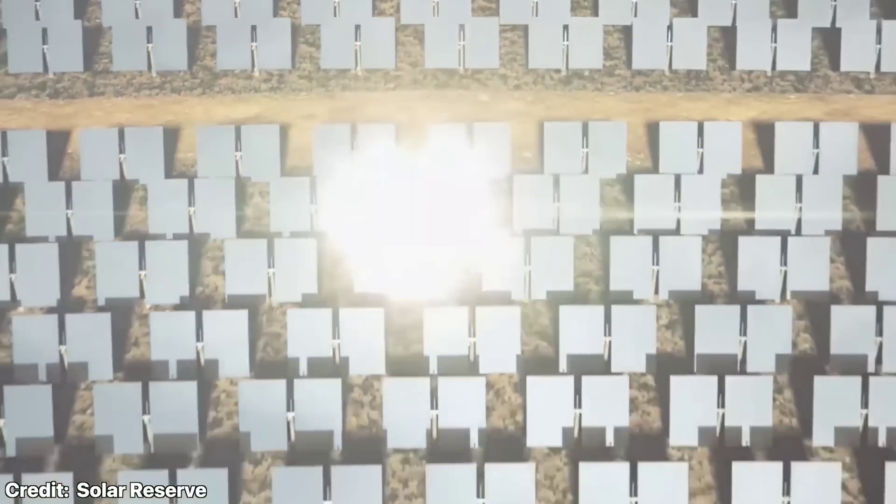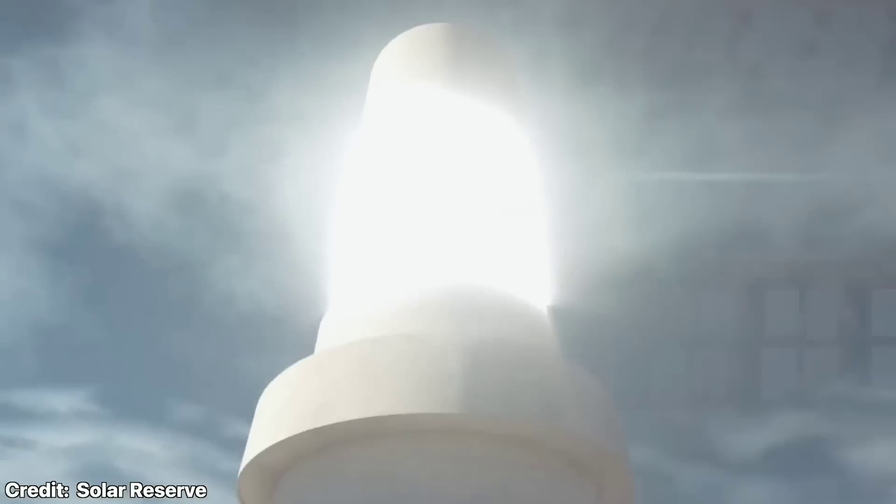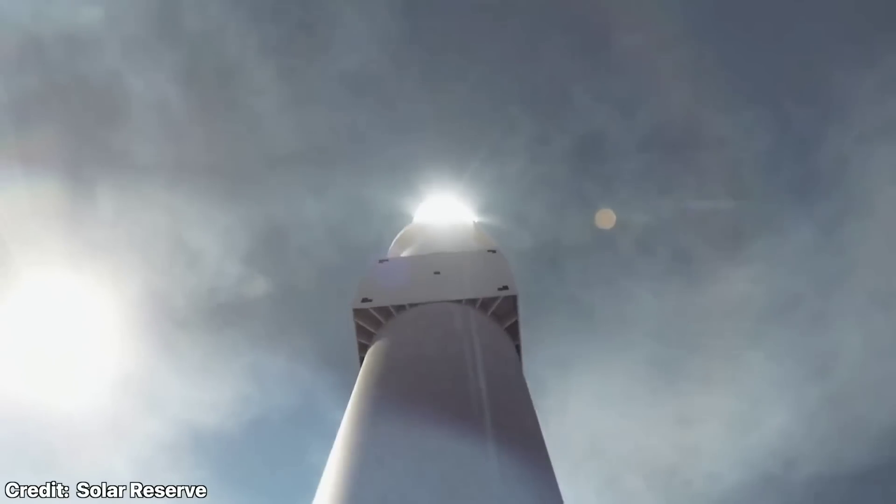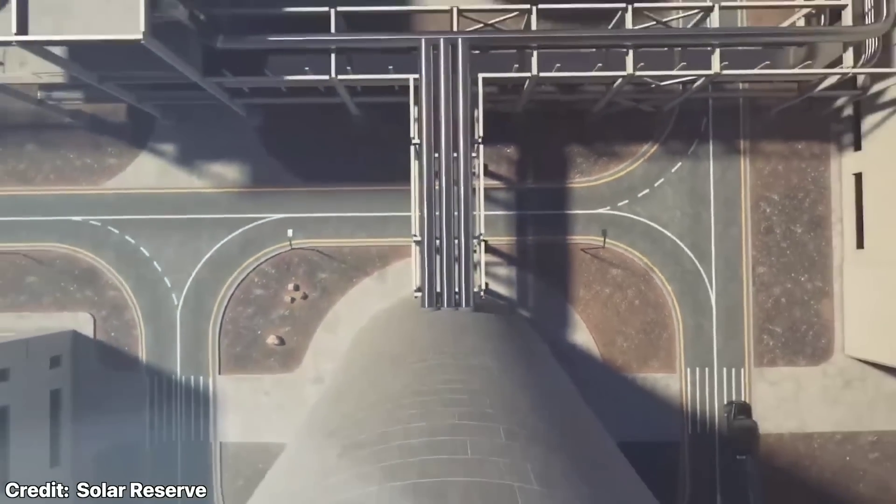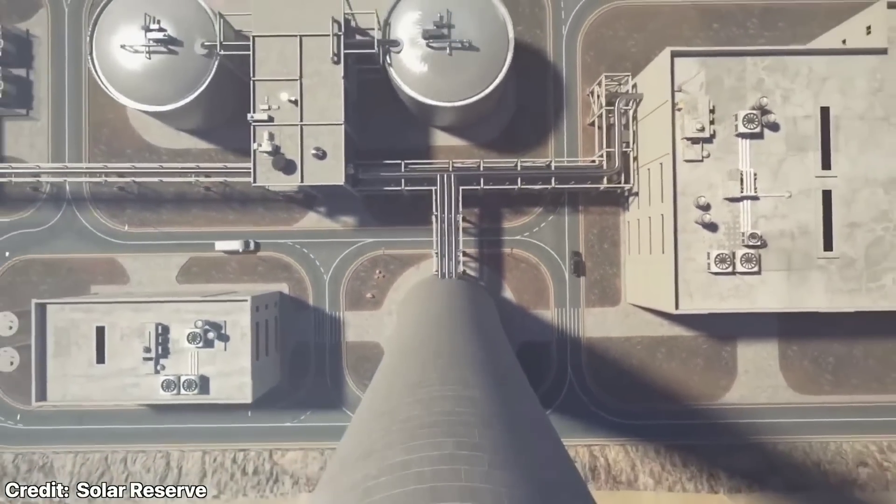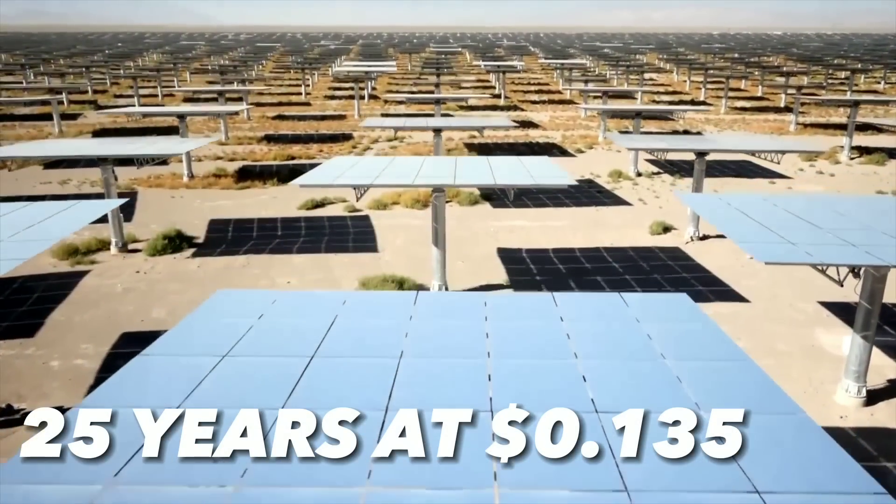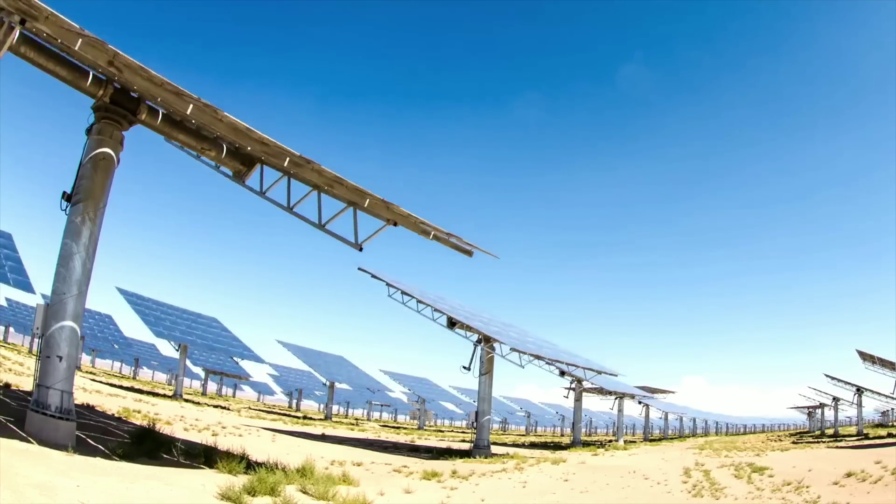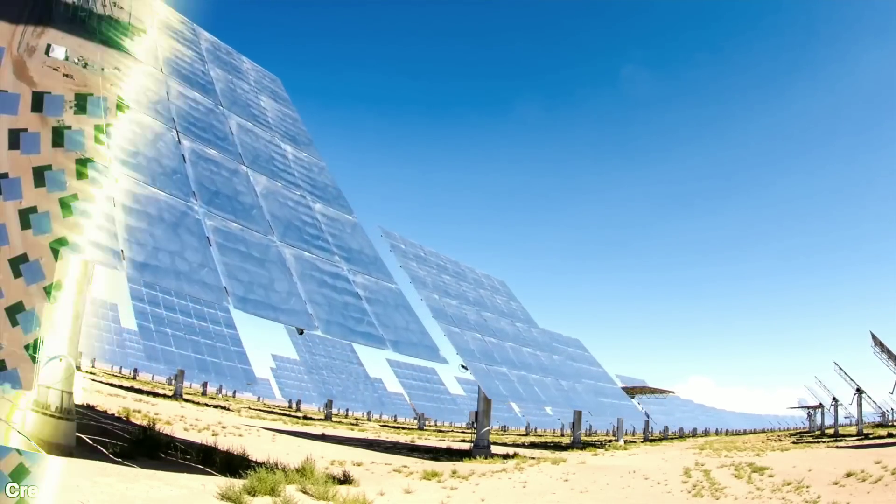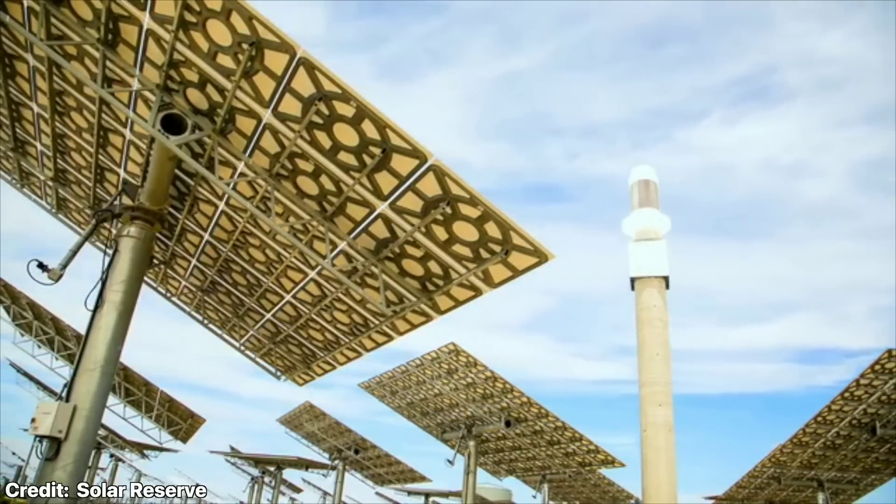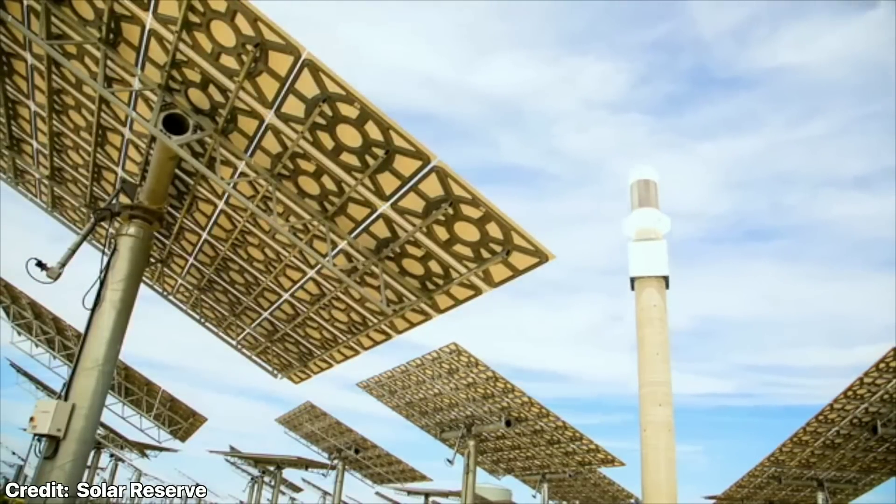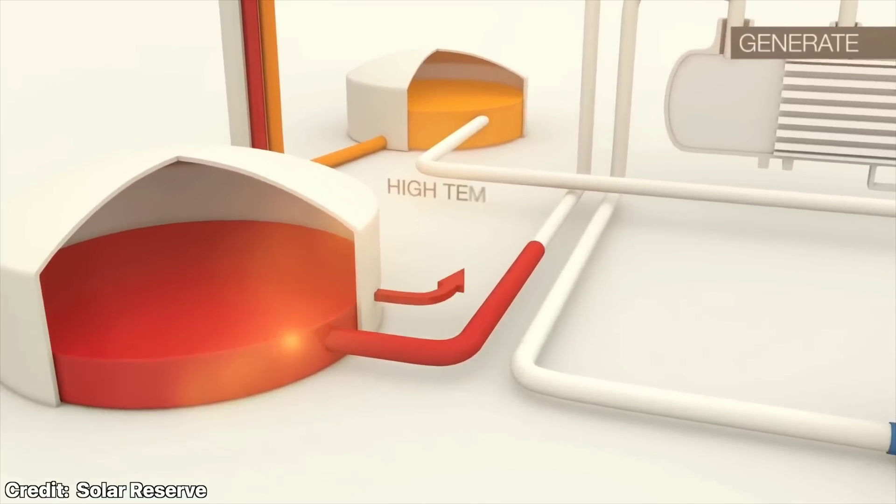Solar Reserve had high hopes for the Crescent Dune Plant. The plant had a deal with NV Energy, the main electricity provider in Nevada, to sell all its power for 25 years at a rate of $0.135 per kilowatt hour. This was a good price for a renewable energy source that could provide electricity around the clock, but the project faced many delays and challenges.